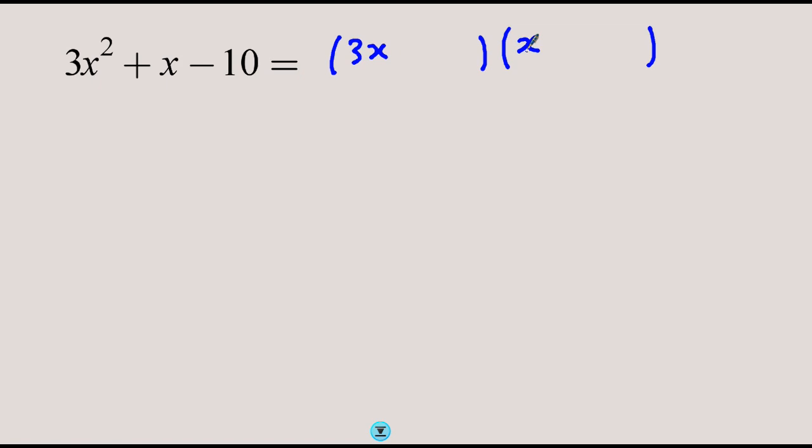Consider the factors of 3x²: there are no other options except 3x and x. I don't know the signs yet, but I know they are different because the product of the constant is -10. One must be minus and one must be plus, and it really makes a difference where you put them.